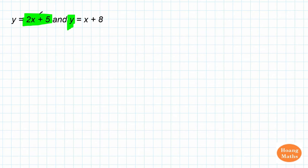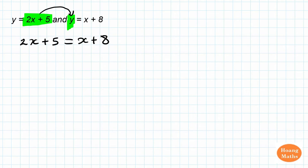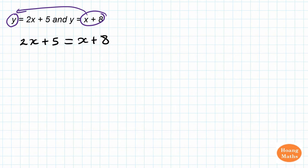So in other words, 2x plus 5 is equal to x plus 8. You can even replace this — y is equal to x plus 8 — it doesn't really matter. You can even write x plus 8 is equal to 2x plus 5. It will give you the same results.